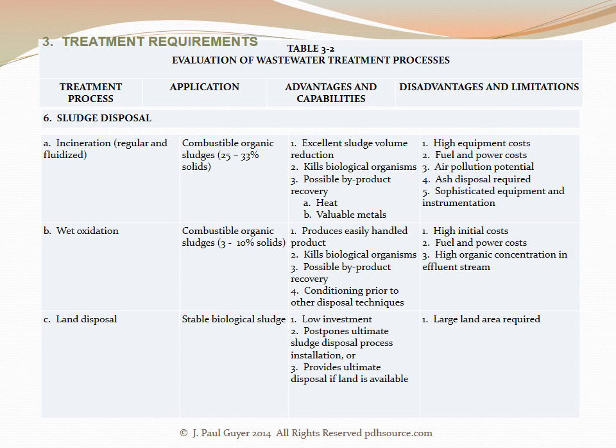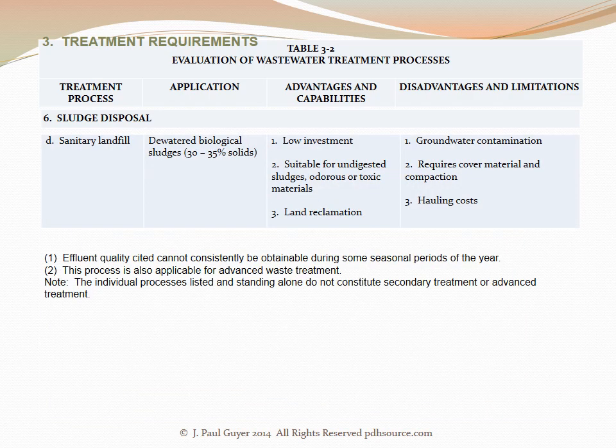The disadvantages of wet oxidation are high initial costs, fuel and power costs, and the high organic concentration in effluent streams. The next sludge disposal process is simple land disposal, applicable to stable biological sludge. The advantages are low investment costs and it postpones or provides ultimate sludge disposal if land is available. The disadvantage is the large land area required. The final sludge disposal process is sanitary landfill, applicable to dewatered biological sludges containing 30 to 35 percent solids. The advantages are the low investment cost, the fact that it is suitable for undigested sludges and odorous or toxic materials, and land reclamation may be a possibility. The disadvantages are groundwater contamination, it requires cover material and compaction, and the hauling costs.